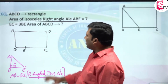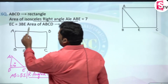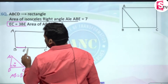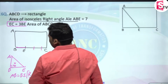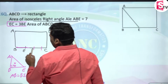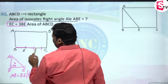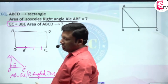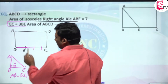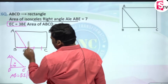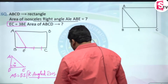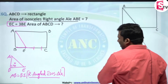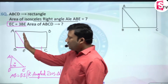EC is equivalent to 3 times BE. If BE is 1 unit, then EC is 3 units. So EC is equivalent to 3·BE. Triangle ABE is a right-angled isosceles triangle.